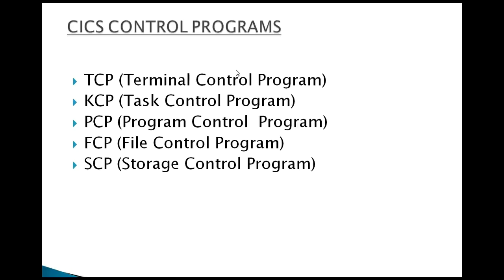KCP stands for Task Control Program. It controls the execution of tasks and their related properties. PCP stands for Program Control Program — it locates and loads a program for execution and transfers control between programs, returning control to the CICS region.